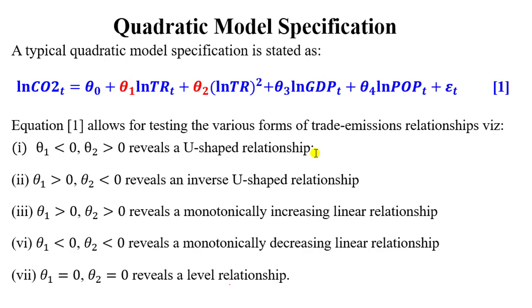If you look at these symbols, it will tell you the shape of the curve. If theta 1 is negative and theta 2 is positive, you will have a U-shaped relationship. If theta 1 is positive and theta 2 is negative, you will have an inverse U-shaped relationship. If both coefficients are positive, it indicates a monotonically increasing linear relationship. If both coefficients are negative, it indicates a monotonically decreasing linear relationship. And if both coefficients are zero, it means a level relationship exists. In other words, trade in this case does not have any significant impacts on carbon emissions. These are the different scenarios you can obtain when you specify a quadratic model.